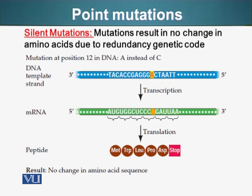The first one is silent mutation. When this type of change in a single nucleotide of the genetic material happens, there is no change in the protein which is ultimately formed from that segment of DNA. And that is due to redundancy of the genetic code — we saw that there were several codons specifying a specific amino acid.